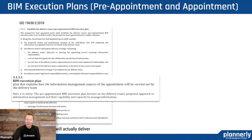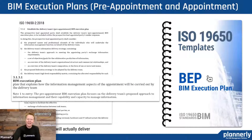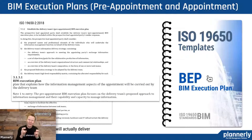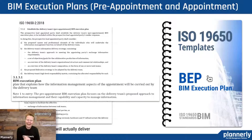When we talk about BIM execution plans, this is one of the most talked-about documents. We do have a template for that. The principle is that it's broken into two parts: one is an answer to the appointing party's requirements, and then as you start to work on the project, you build and continually improve it. This is really how the project team will be delivering — what are the processes and the steps that teams are going to go through. This is where rubber meets the road.